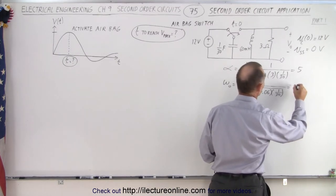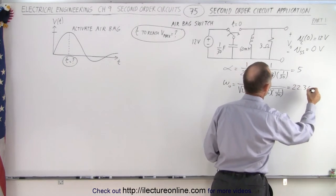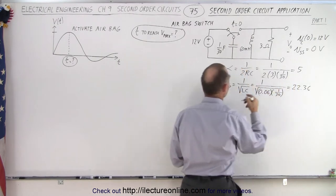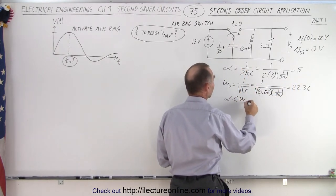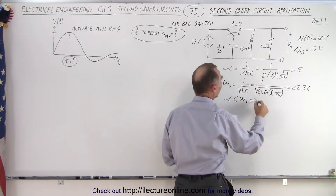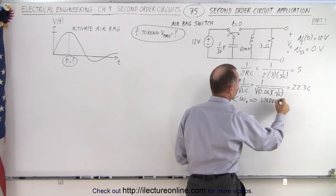We can see that alpha is smaller than omega sub-naught, which implies an underdamped circuit. I kind of gave that away already by drawing the oscillating voltage across the resistor, which is an indication of underdamping.